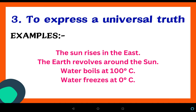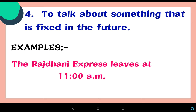To express a universal truth: simple present tense is also used to express universal truths. For example: the sun rises in the east — सूरज पूरब से निकलता है. The earth revolves around the sun — पृथ्वी सूरज के चारों ओर चक्कर लगाती है. Water boils at 100 degrees Celsius. Water freezes at 0 degrees Celsius.